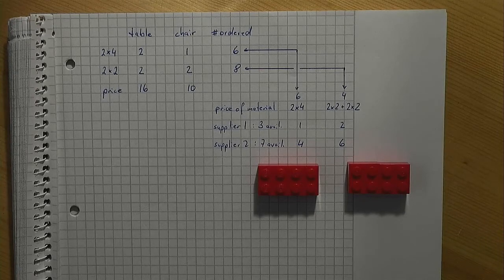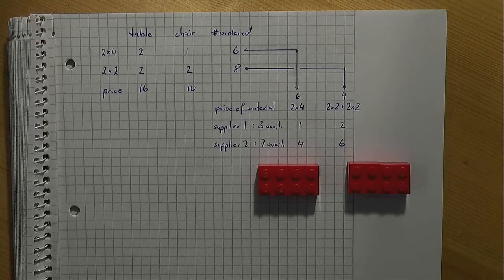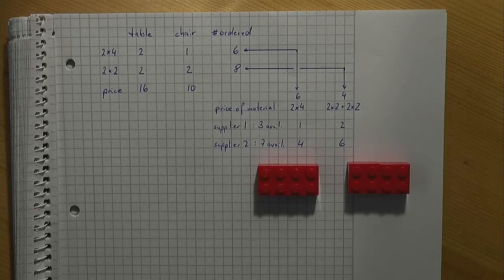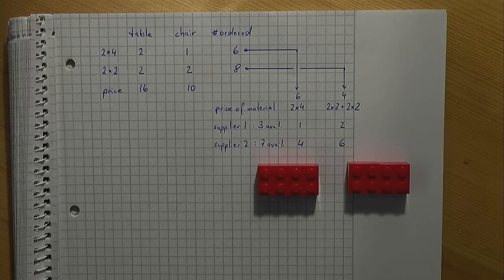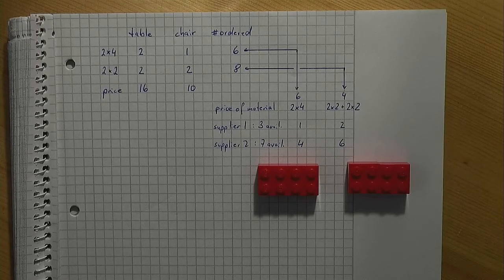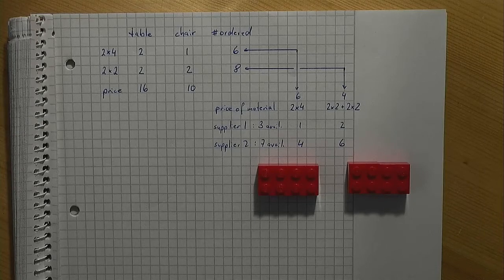In contrast to what we had in previous videos, let's assume now that the 2x4s and the 2x2s are not on stock, but they must be bought from suppliers. Two suppliers exist. Both of them make 2x4s. But upon request, a 2x4 can be cut into two, so that a pair of 2x2s can be made available.